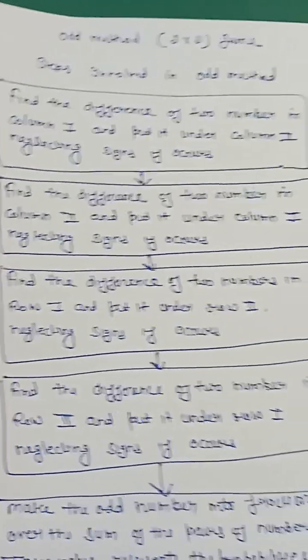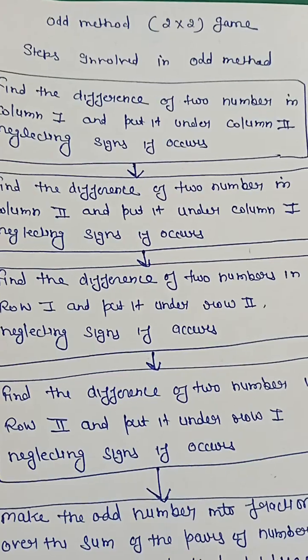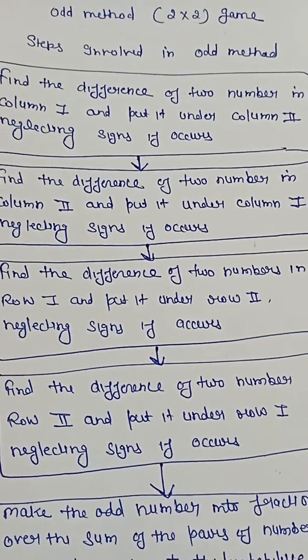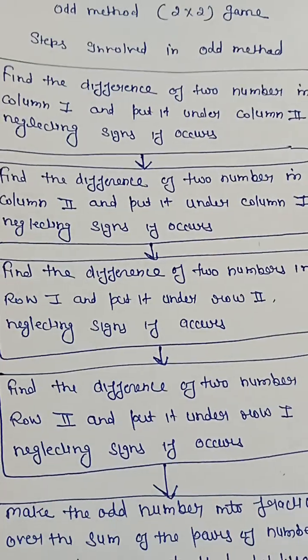The first step for solving the odd method: find the difference of two numbers in column 1 and put it under column 2, neglecting sign if occurs.